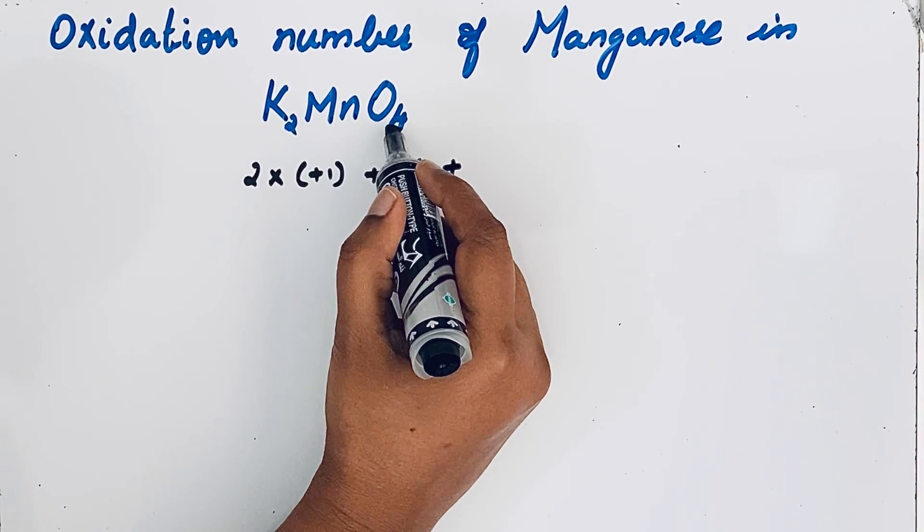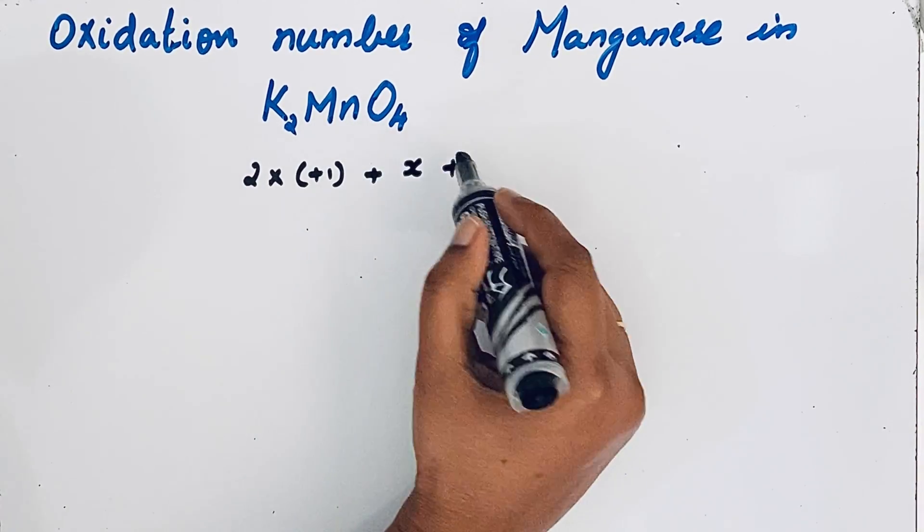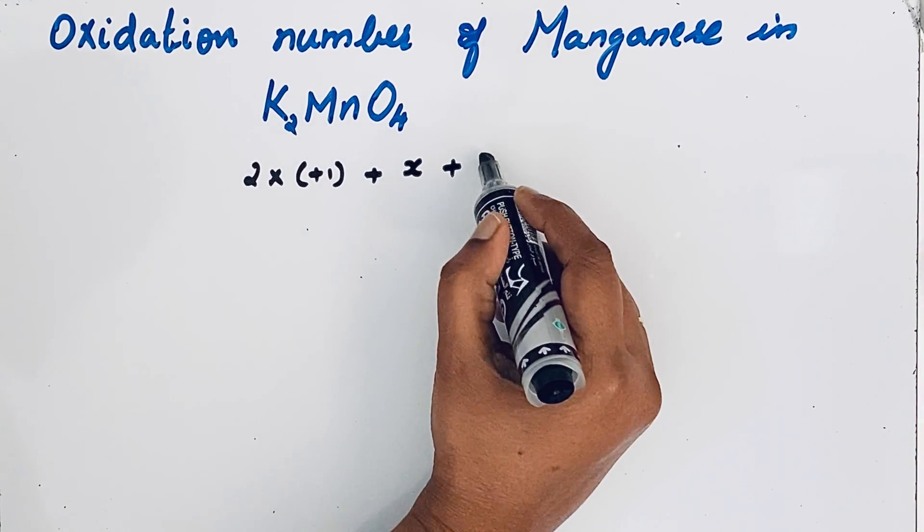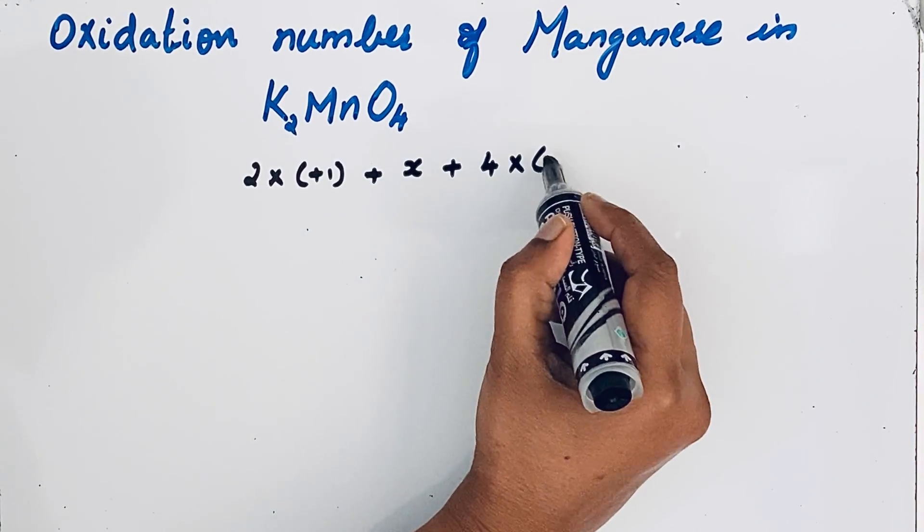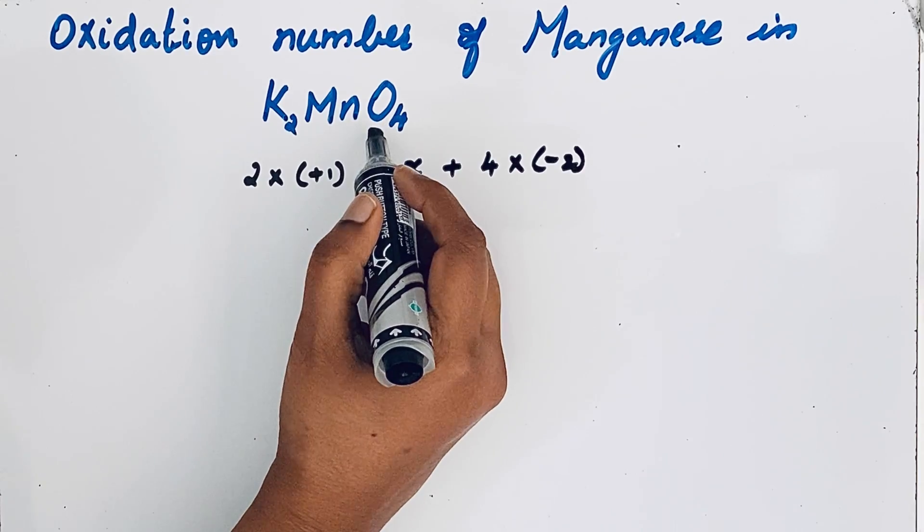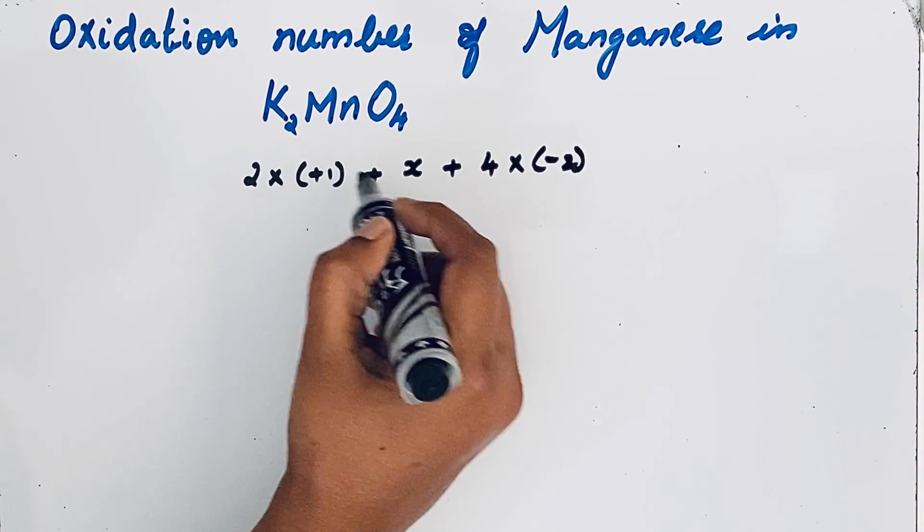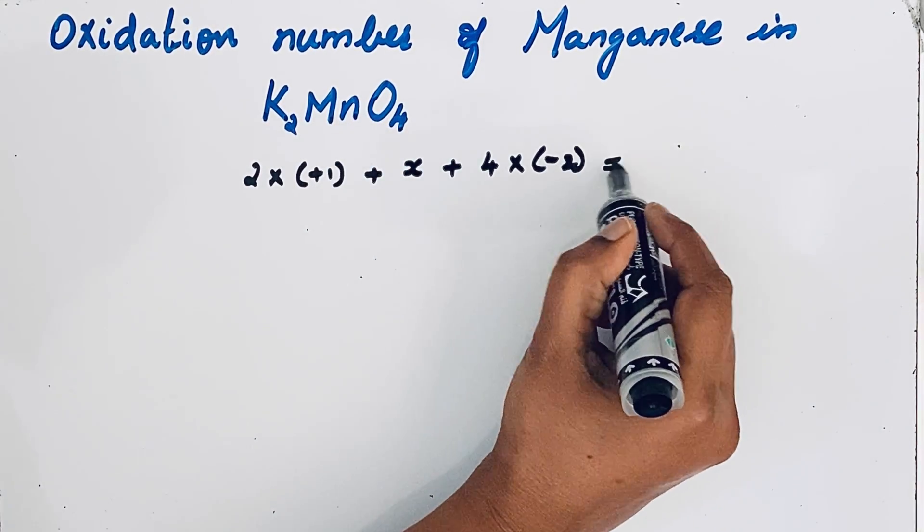Oxygen oxidation number is minus two. There are four oxygen atoms here, so four into minus two. It is a neutral compound, so the algebraic sum of oxidation number of all the atoms must be zero.